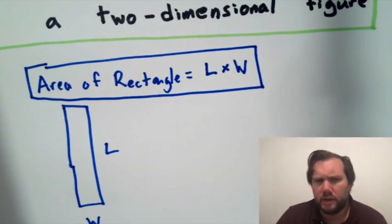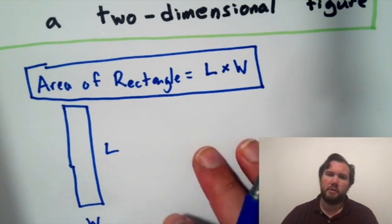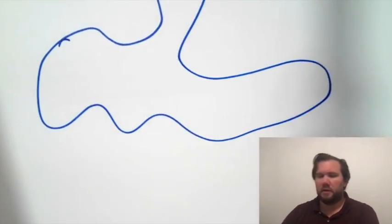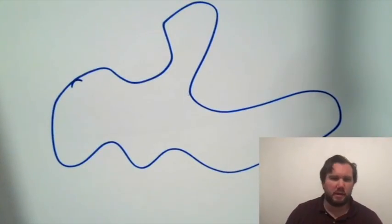And there are other shapes whose area you know how to calculate, like circles or triangles, but what if we had a more complicated shape? What if we had something that looked like this? How would we find the area of that more complicated shape?